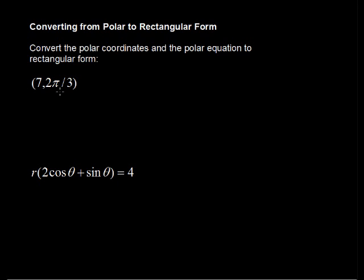First, the polar coordinates (7, 2π/3). These are arranged in the form r, radius, and then the angle in radians theta. So (7, 2π/3) means that we are defining a point, a point on a polar coordinate plane.